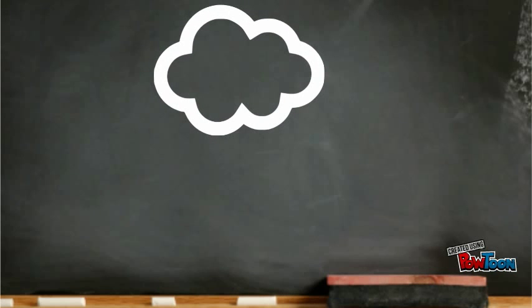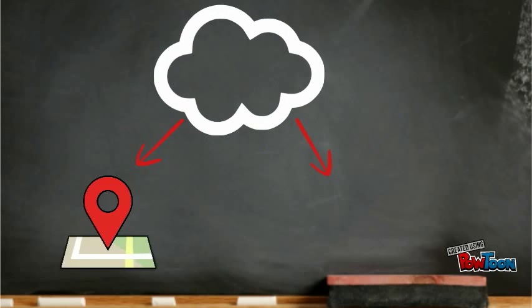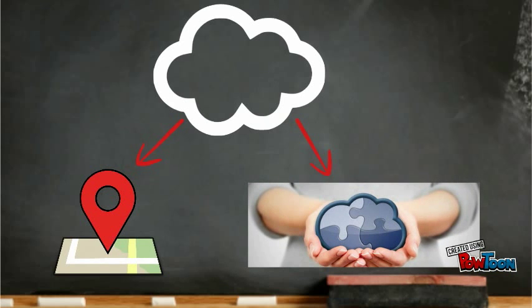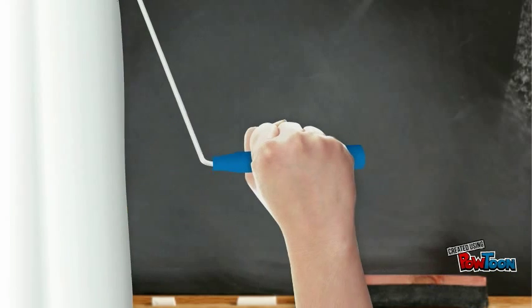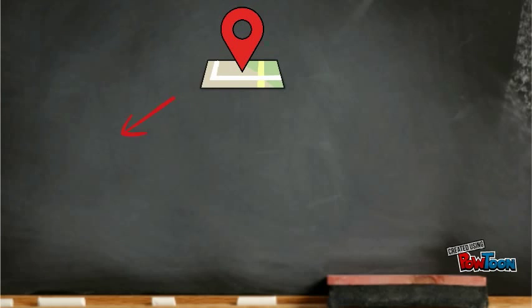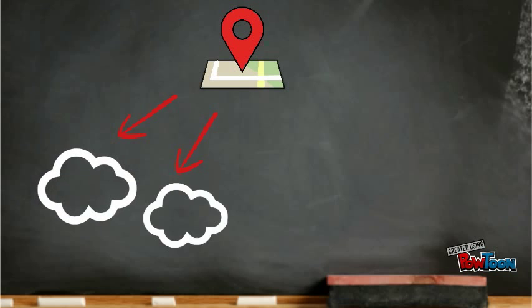Cloud computing is typically described in one of two ways: it's either based on the cloud's location or the cloud's service. Based on the cloud's location, we can classify cloud into four different types.